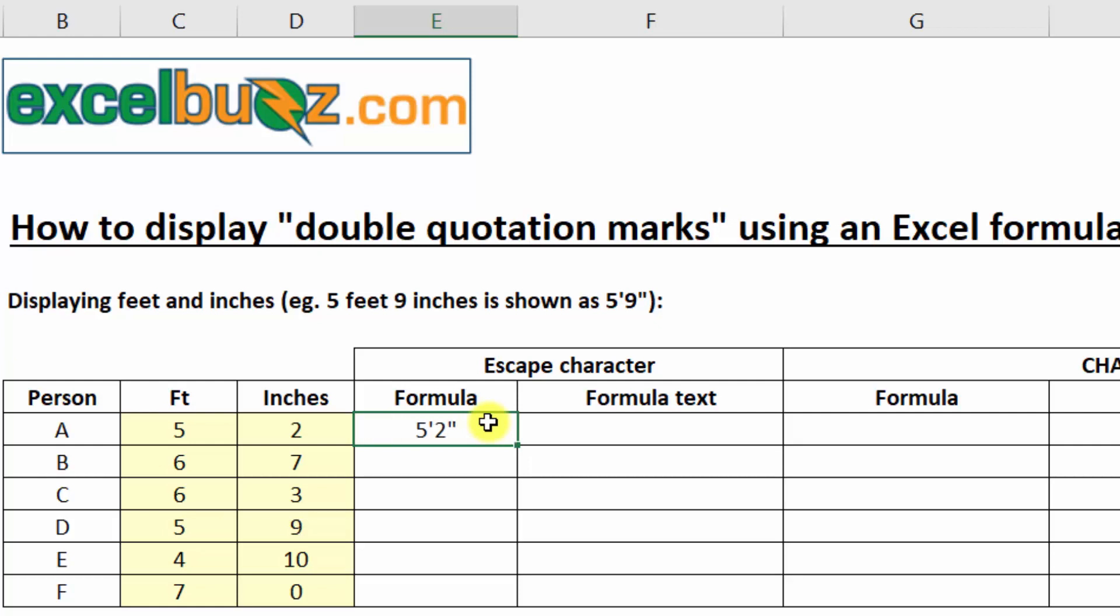But instead of typing it manually, we want a way to display that using a formula that we can then just copy down and use for all six people in the list.